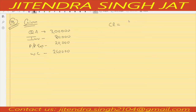In this question we need to calculate current ratio, which means current assets upon current liability. First we will compute current assets. When we add quick assets, inventory, and prepaid expenses, we get current assets. So: 3 lakh plus 80,000 plus 20,000 equals 4 lakh — that is your current asset.